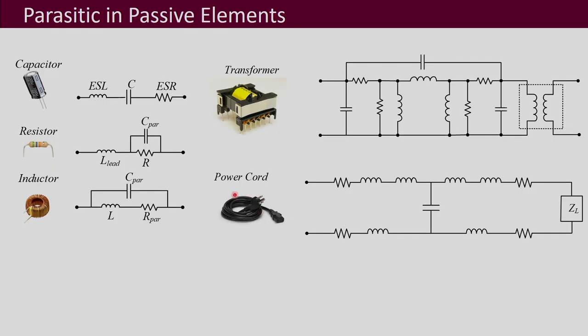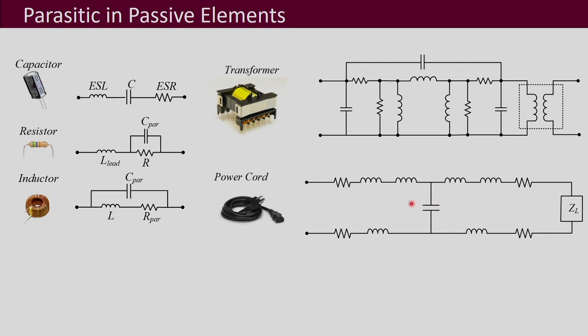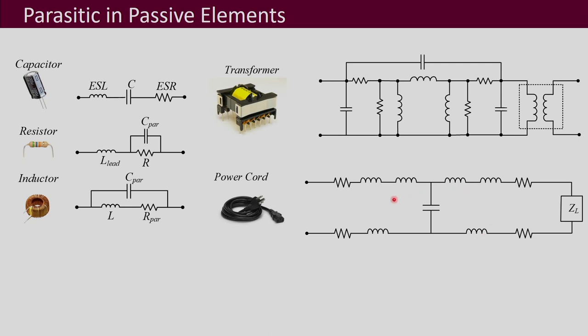Further, your power cords — the kind we use in everyday life — have to be used for any power electronic converter. For low frequencies, we just assume they have some small inductance or small resistance and model them that way. But in reality it is not so — it is actually like a transmission line having all R, L, and C present together. In power electronic converters, the cables may be carrying high frequency switched voltages and currents, so this transmission line model becomes all the more relevant.